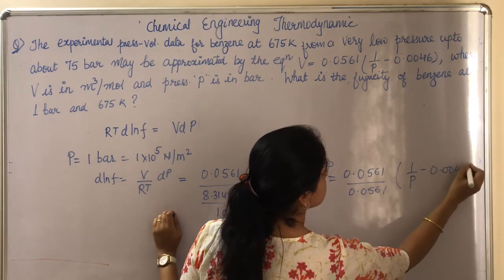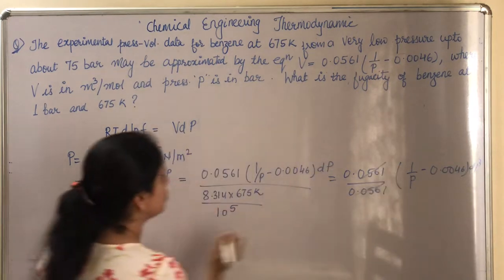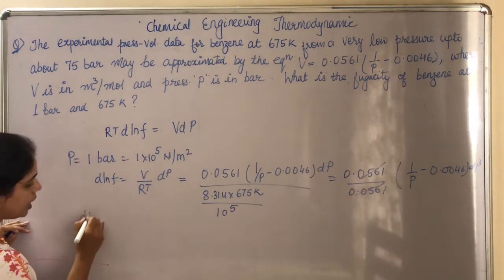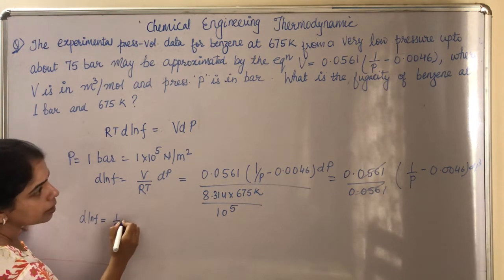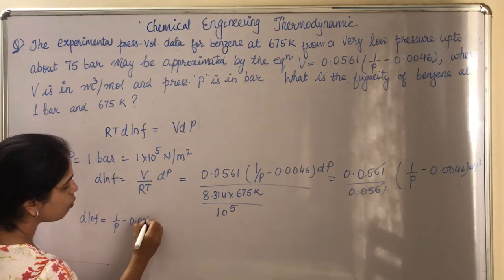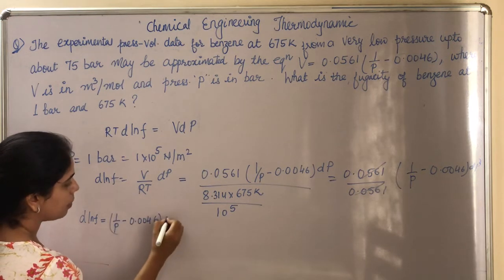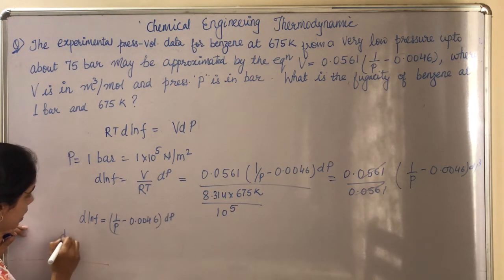So this and this will cancel out, and then we have d ln f = (1/P - 0.0046) dP. So d ln f = d ln P - 0.0046 dP.